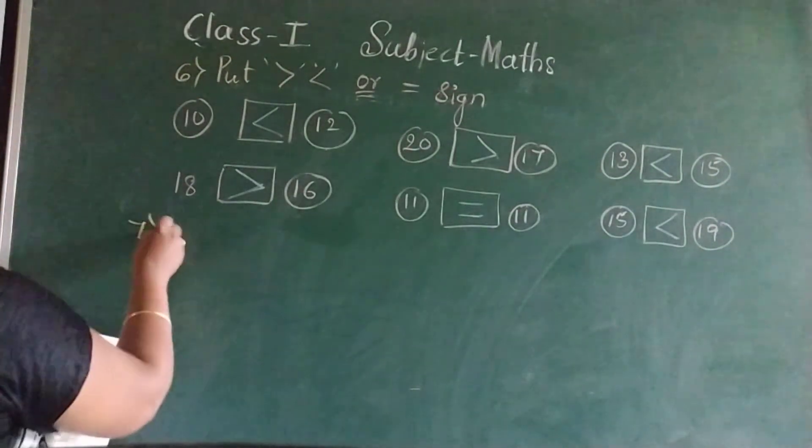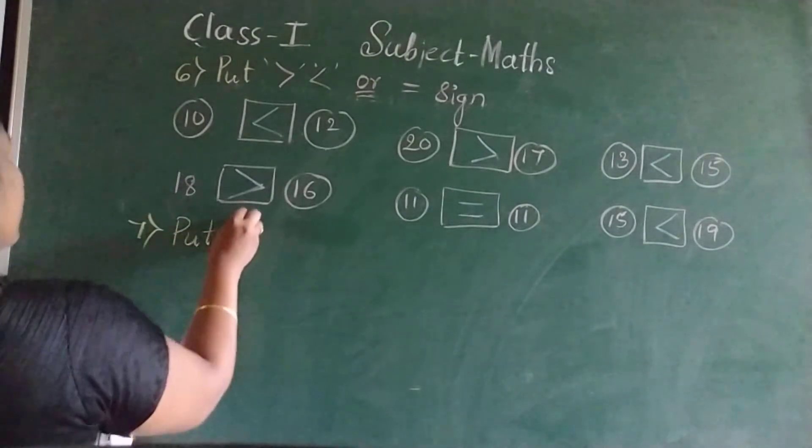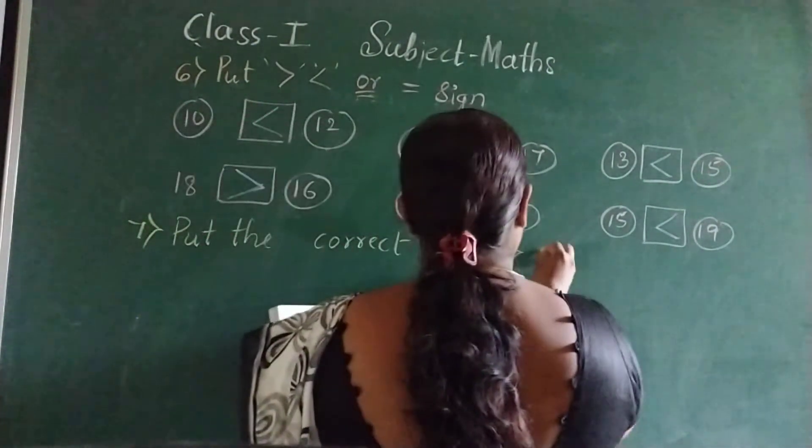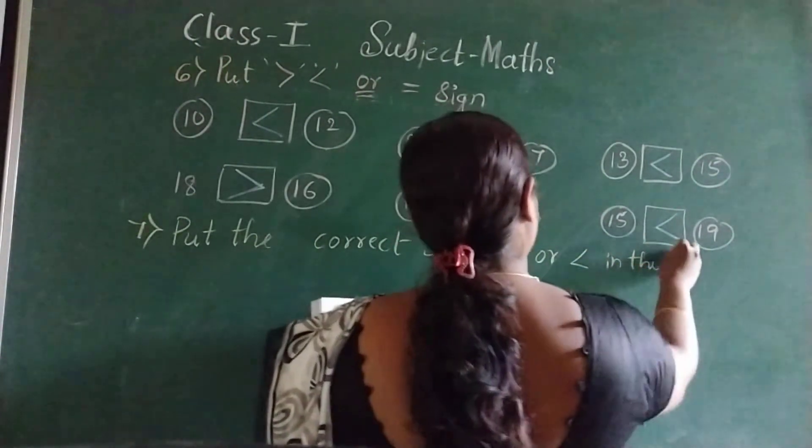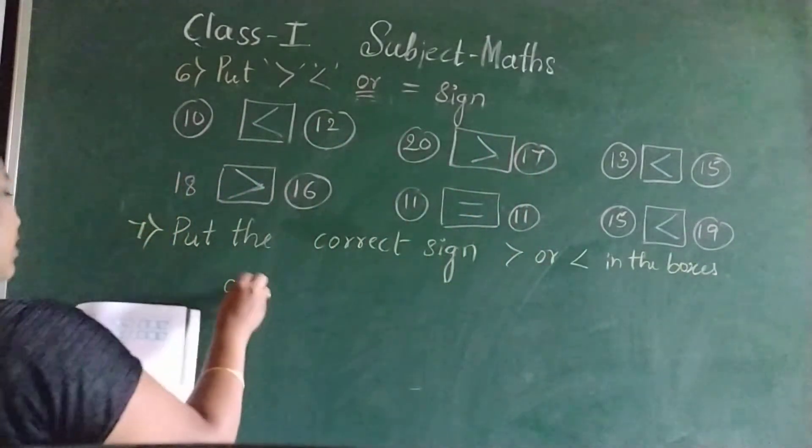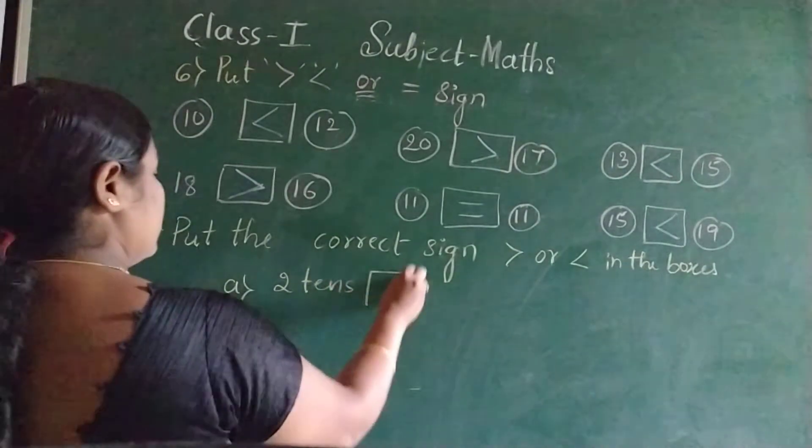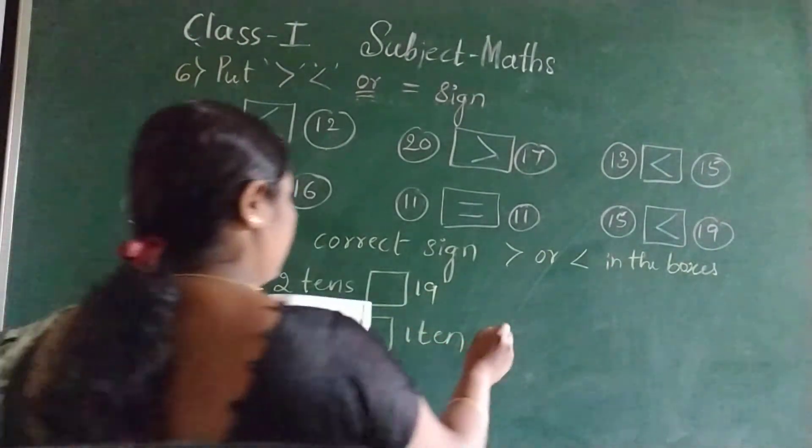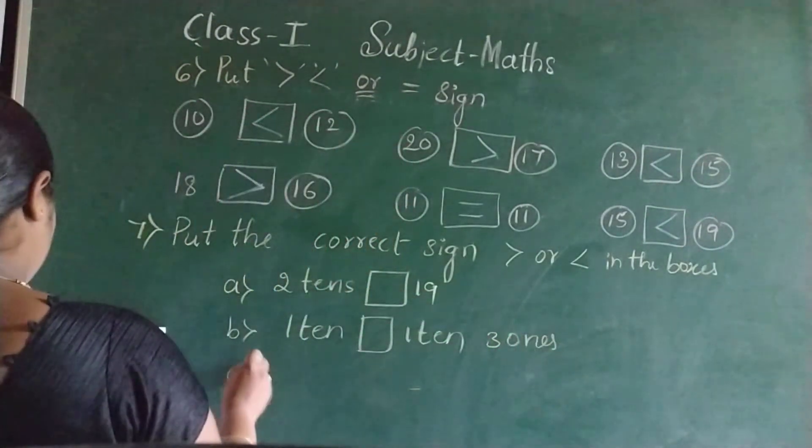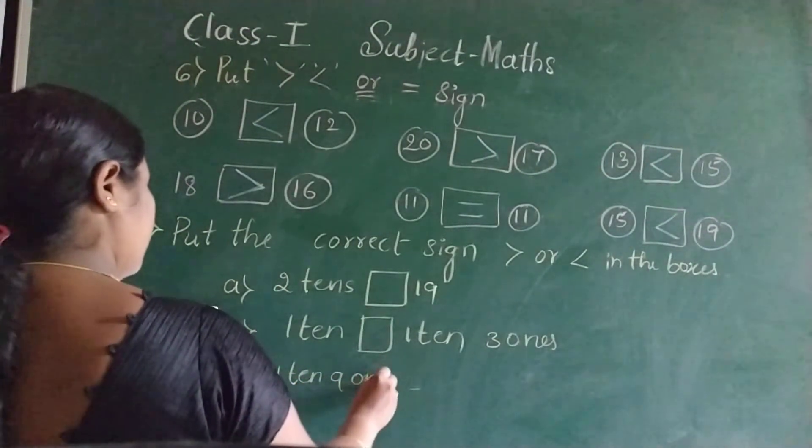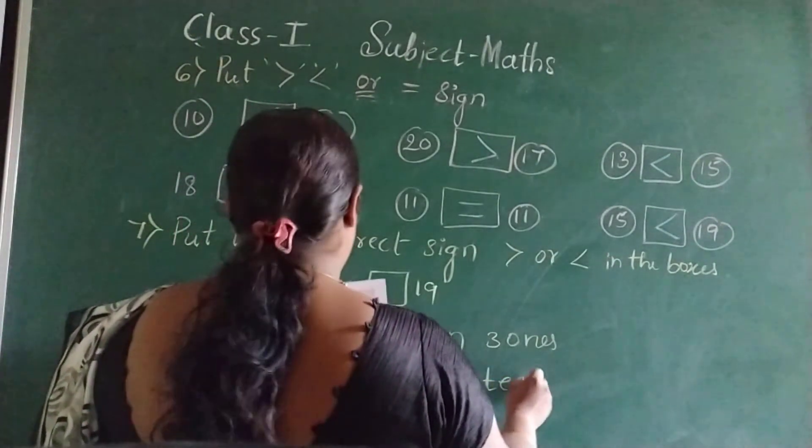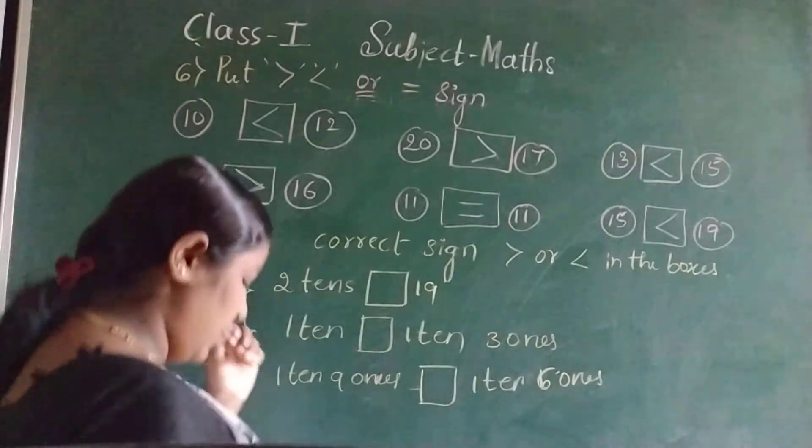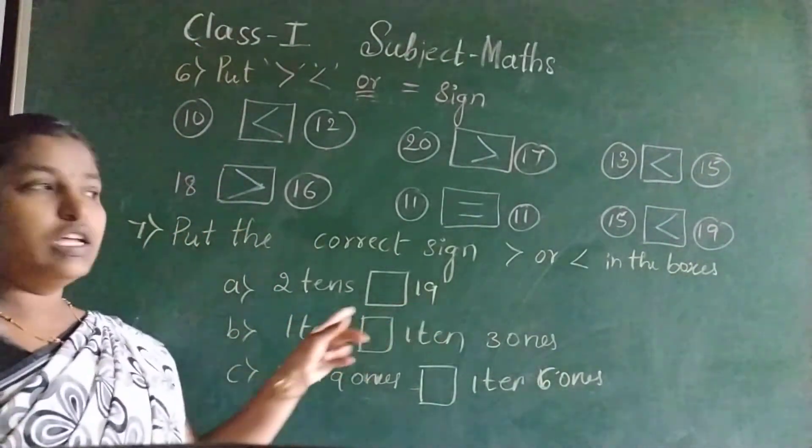Now seventh question. Put the correct sign, greater than and less than in the boxes. A. Two tens, nineteen. B. One ten, one ten three ones. C. One ten nine ones, one ten six ones. Just see the questions, understand this. Two tens, nineteen. So two tens means twenty. Nineteen. Which is big? Two tens is big.